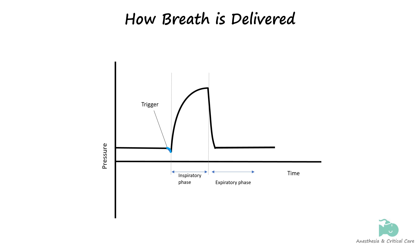After the breath starts, the machine delivers gas to the patient in a set pattern throughout inspiration, which is called the target variable. The two main target variables are a specific inspiratory flow rate or a pressure goal. The breath delivery stops when a certain amount of time has passed, or the ventilator senses a decrease in the patient's airflow. This is known as the cycle variable.